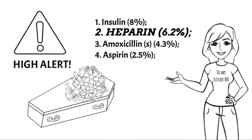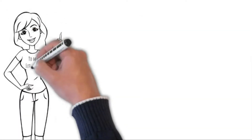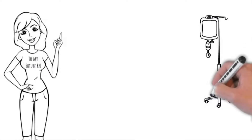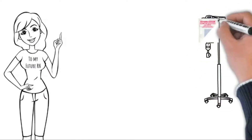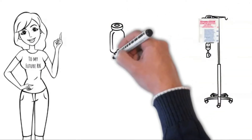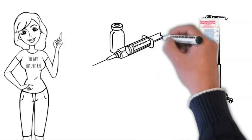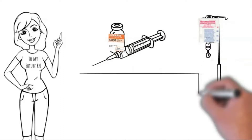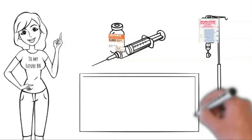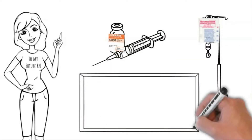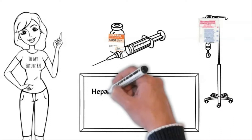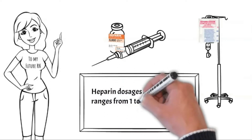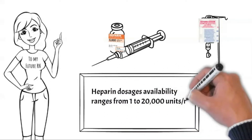Heparin may be given as a continuous IV infusion or a subcutaneous injection depending on the indication. There are many concentrations of heparin ranging from 1 unit to 20,000 units, so carefully examine each pre-filled syringe and vial before administration.